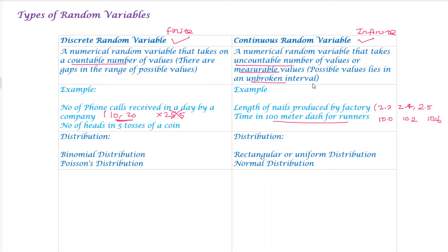In discrete random variable examples, we have distributions such as binomial distribution. In this distribution, we use a discrete random variable. For a continuous random variable, we have a rectangular or uniform distribution and a normal distribution. We will discuss these in detail in upcoming videos.